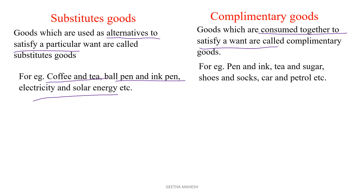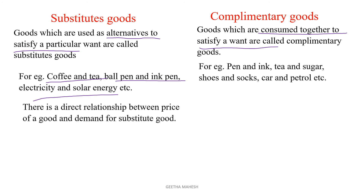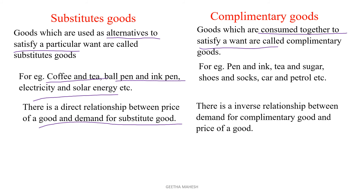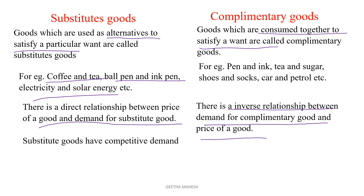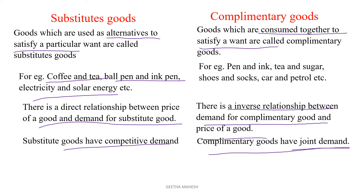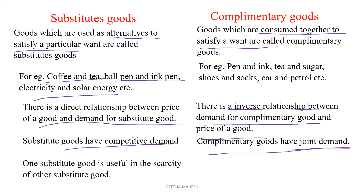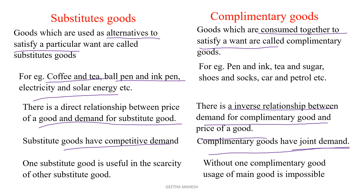Car and petrol are also complementary goods. There is a direct relationship between the price of a good and demand for substitutes. In the case of complementary goods, there is an inverse relationship. Substitute goods have competitive demand as they compete with each other, while complementary goods have joint demand because they are consumed together. One substitute good is useful in the scarcity of the other, but for complementary goods, without one good, usage of the main good is impossible.